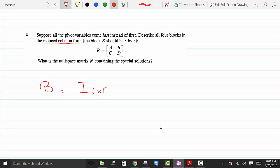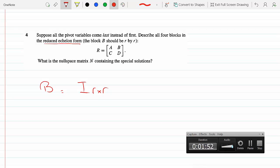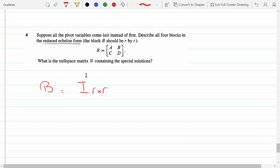If they appear last, that means they appear not necessarily on the first column and the second column. So if I know that B is carrying the pivots and it's an R by R matrix, I immediately know that matrix A will have to be a zero matrix, because it's not carrying any pivots because they said they come later.